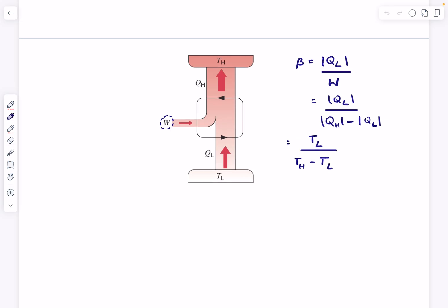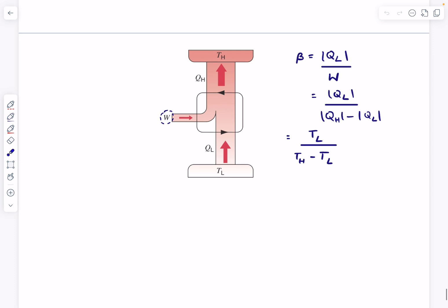We can also write this as TL divided by TH minus TL. How we do this is by using the idea that as we are talking about reversible heat engines, the net entropy transfer in a cycle must be zero. Then we get the relation that QH upon TH equals QL upon TL.